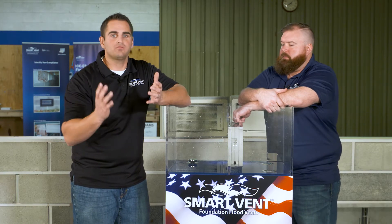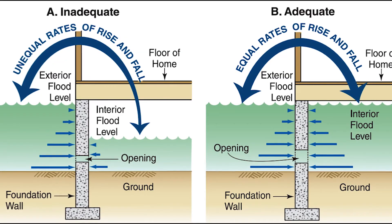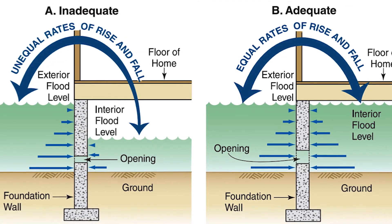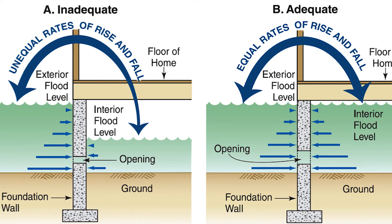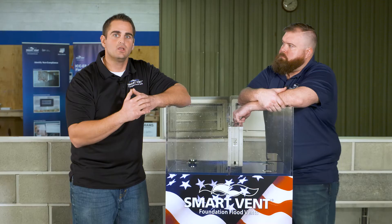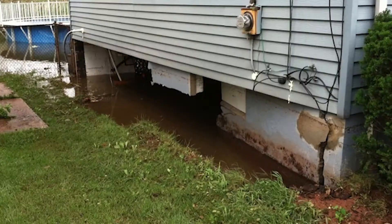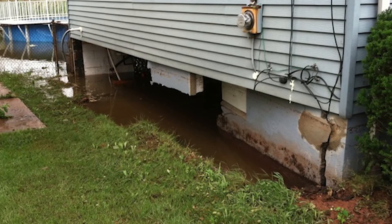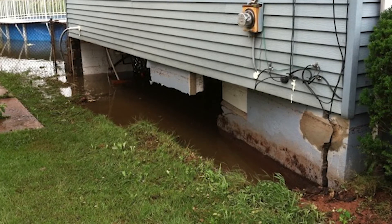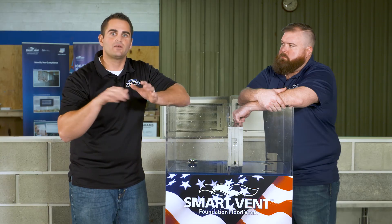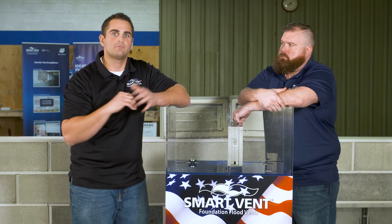A flood vent is a device that's going to relieve pressure off of the foundation wall or an enclosure wall that's below the base flood elevation or design flood elevation. Why are we relieving that pressure? Because if we don't, the wall can collapse or have significant structural damage. So flood vents are going to allow the water to travel in and out and equalize pressure on either side of the wall at all times during a flood.